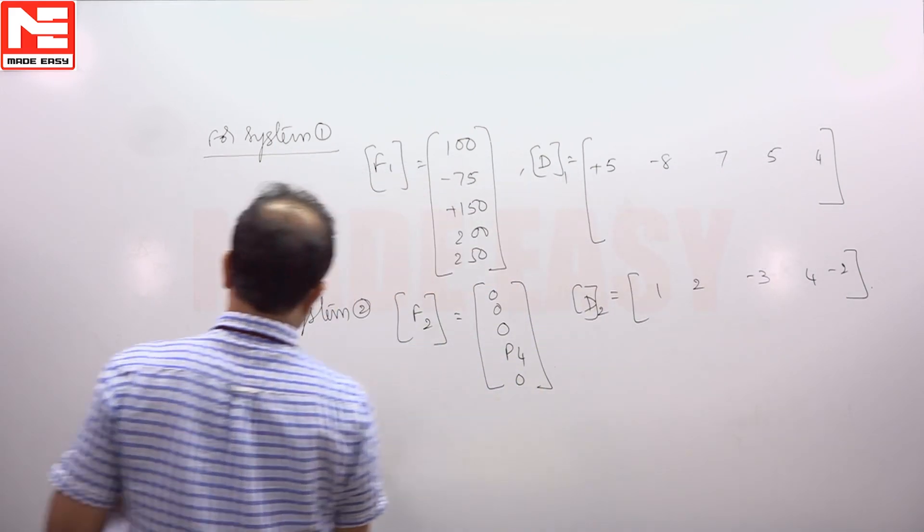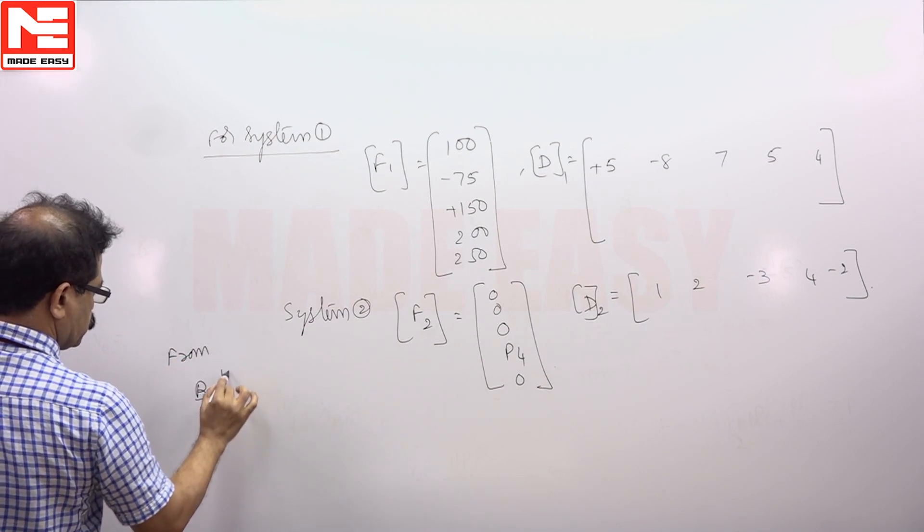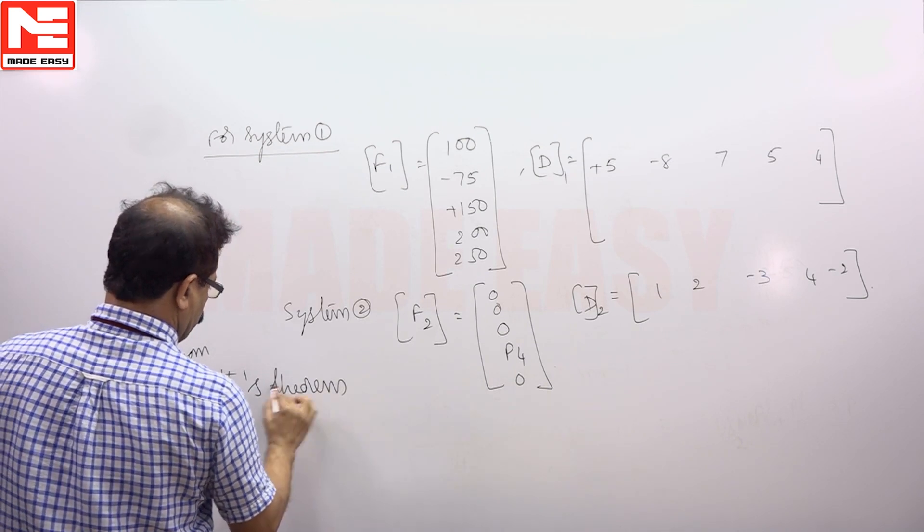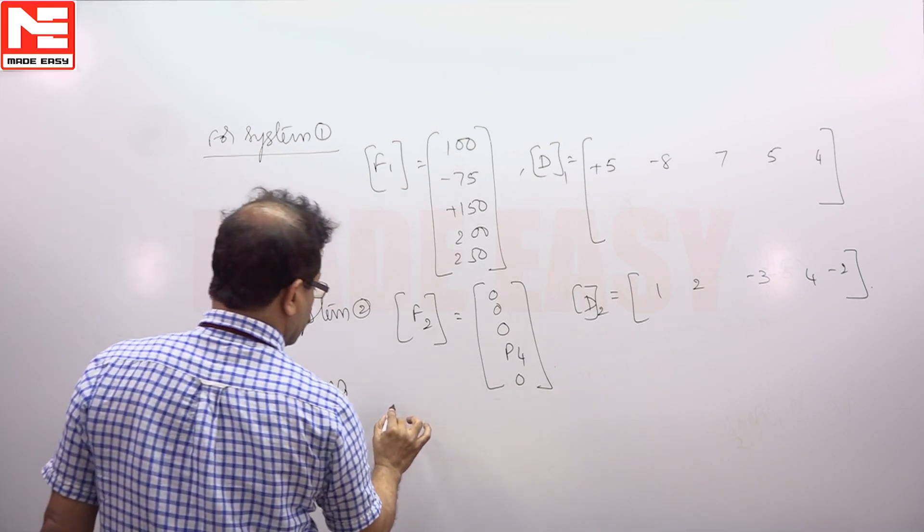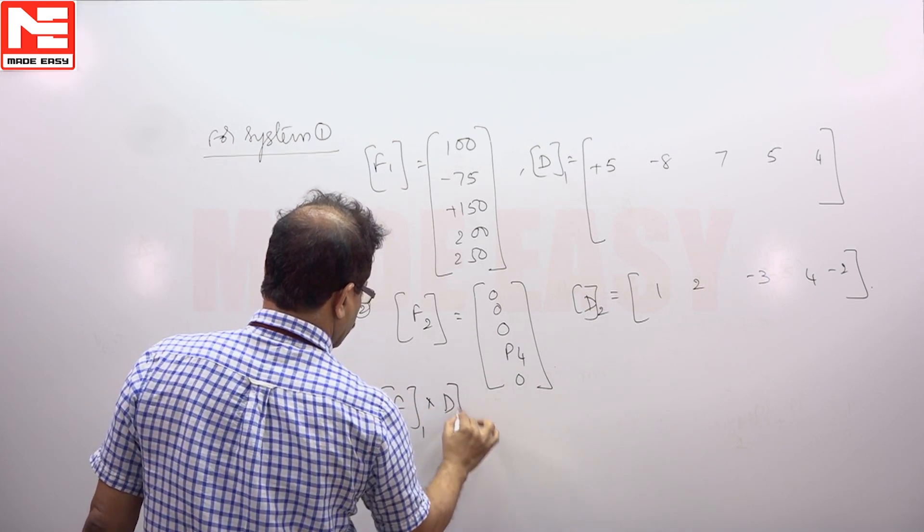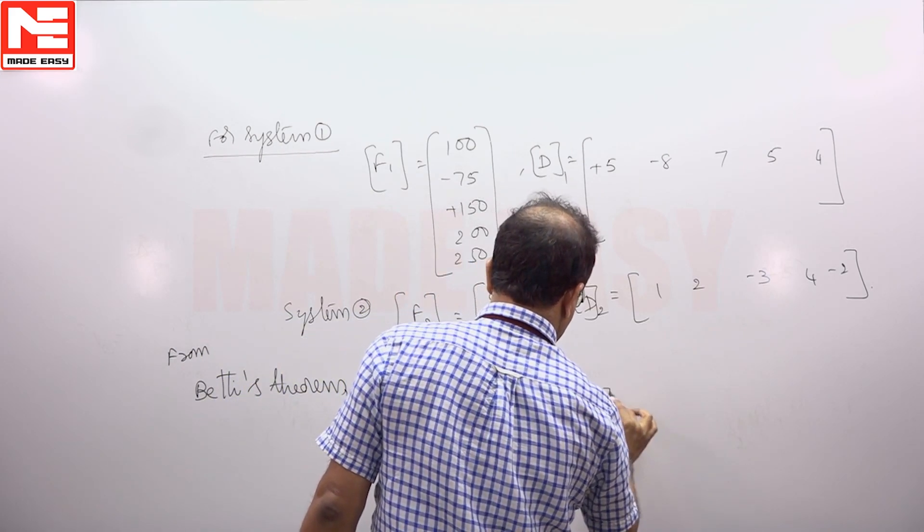Then Betti's theorem tells you work done F1 into D2 must be equal to F2 into D1.